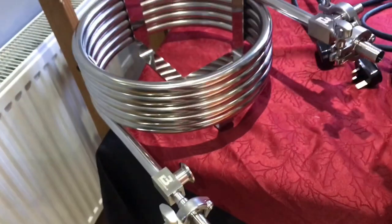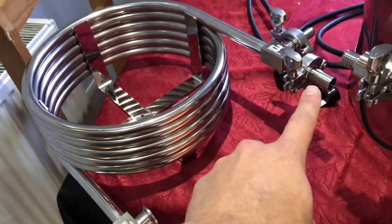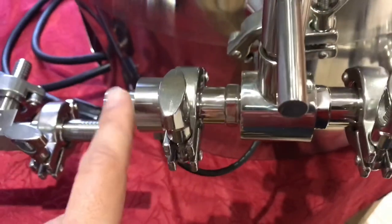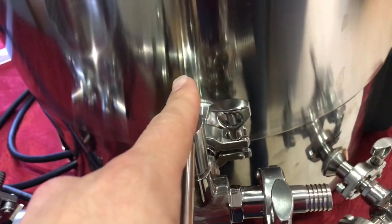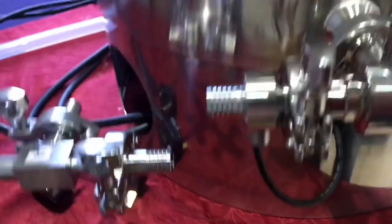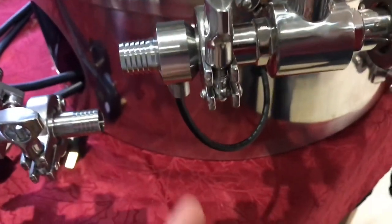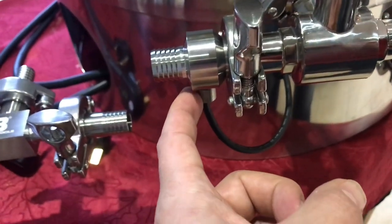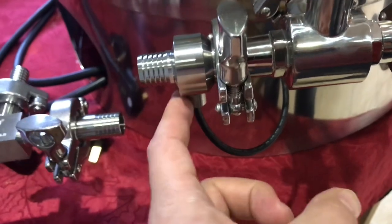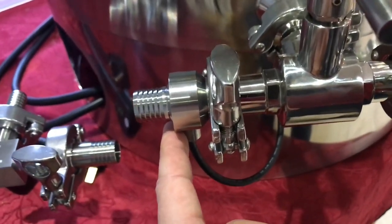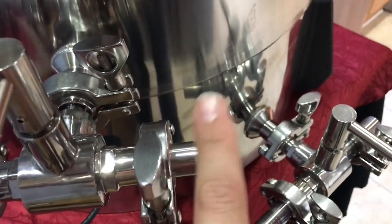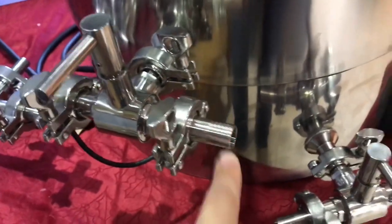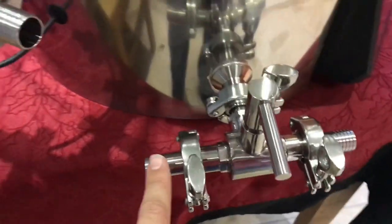The wort's going to pump out of the counter flow chiller, come out and go into the third three-way valve. This needs to be set the right way so that the wort goes back into the tank. Because I've got the third temperature sensor, I can tell what the temperature is whilst I'm recirculating. Once I'm hitting pitching temperature I can then flick this valve and that will allow me to transfer the wort into the fermenter.